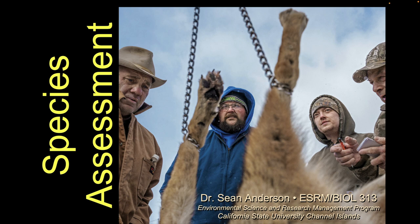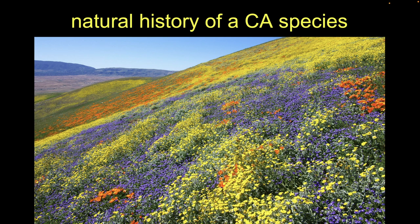What we're going to do today is start to pick which species you guys want to work on. Generally speaking, you're going to tell us about the status of some critter, some organism, some species that exists in California. It might also exist outside California, but it exists at least in California as well.